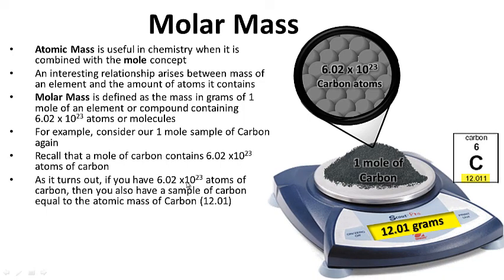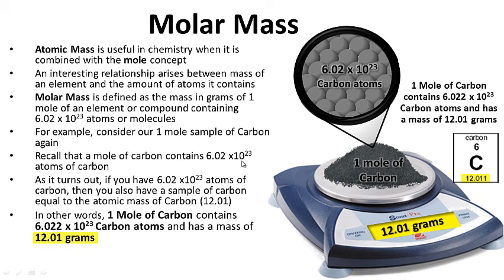As it turns out, if you have 6.02 times 10 to the 23rd atoms of carbon, then you also have a sample of carbon equal to the atomic mass of carbon — 12.01 grams. So if you have 6.02 times 10 to the 23rd carbon atoms, then you also have 12.01 grams of carbon, which is the atomic mass seen on the periodic table, and you also have one mole of carbon. In other words, one mole of carbon contains 6.02 times 10 to the 23rd carbon atoms and has a mass of 12.01 grams.